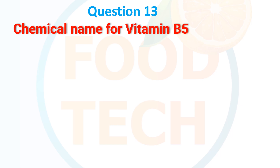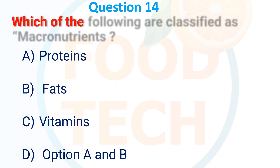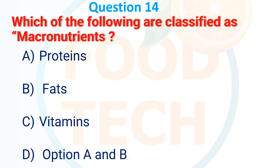Question 13: Chemical name for Vitamin B5 — A. Ascorbic acid, B. Pantothenic acid, C. Acetic acid, D. Hydrochloric acid. The answer is B. Pantothenic acid.